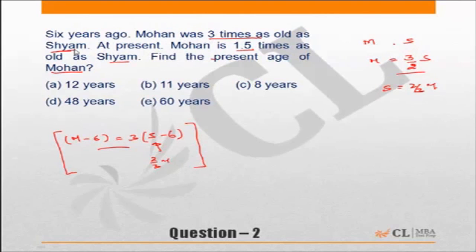Six years ago Mohan's age was three times as old as Shyam. That means Mohan minus six should be a multiple of three, it can be divided by three. Because six years ago Mohan's age was three times as old as Shyam. Look at this equation. M minus six is equal to three into S minus six. That means Mohan's age minus six should be a multiple of three.